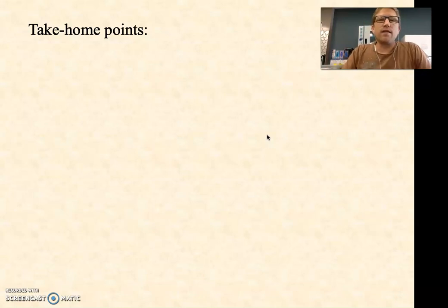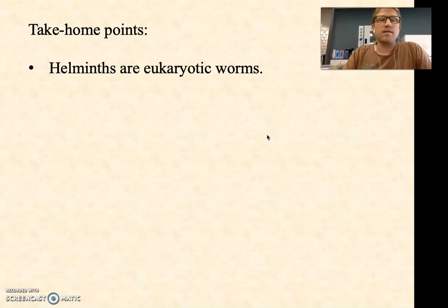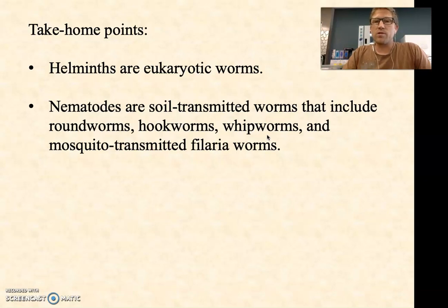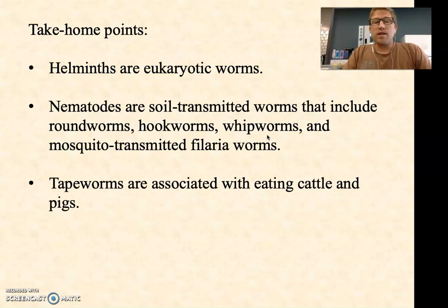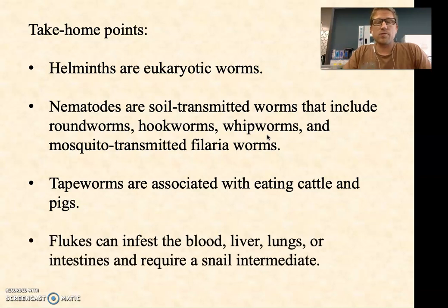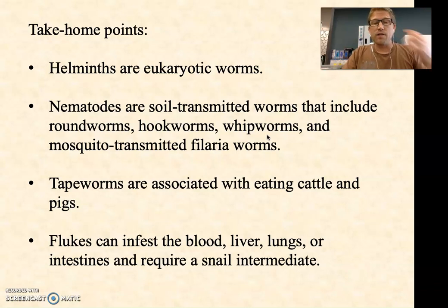So what are some take-home points regarding the helminths in this context of pathogenic eukaryotes? They're eukaryotic worms — animals, highly complex, eukaryotic at the cellular level. The nematodes are soil-transmitted worms that include roundworms, hookworms, whipworms, and filarial worms, with filarial worms being mosquito-transmitted. Tapeworms are associated with eating beef or pork that hasn't been cooked properly. Flukes can infest — and we use the word infest rather than infect for worms — the blood, liver, lungs, or intestines. Most require a snail intermediate, like Schistosoma.